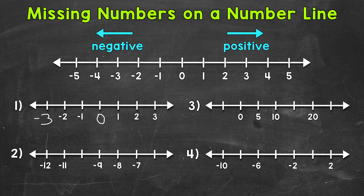Let's start at negative 12 and count up by one to find the missing numbers. Negative 12, negative 11, then we have negative 10 — that's our first missing number. Then we have negative nine, negative eight, negative seven, and then negative six for our other missing number. We can always double check by counting up or down. Let's count down: negative six, negative seven, negative eight, negative nine, negative 10, negative 11, and negative 12. So those missing numbers fit in that number line.